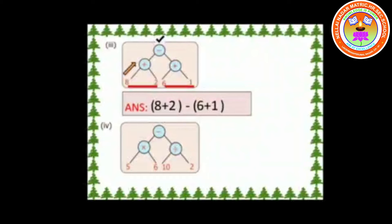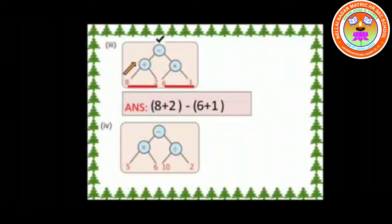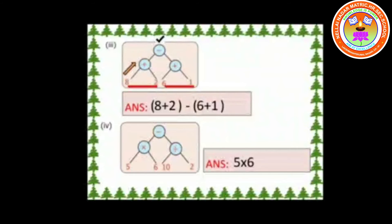Fourth one: start from the bottom. The symbol × is the branch on the left side and its leaves are 5 and 6. The symbol ÷ is the branch on the right side and its leaves are 10 and 2. Here the symbol minus is the node, so we can write it as 5 × 6 − 10 ÷ 2.